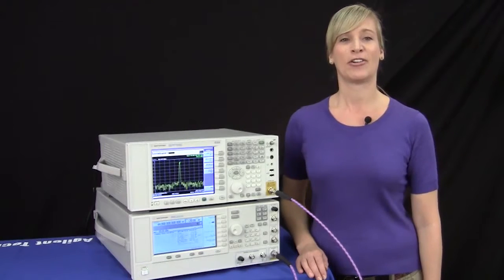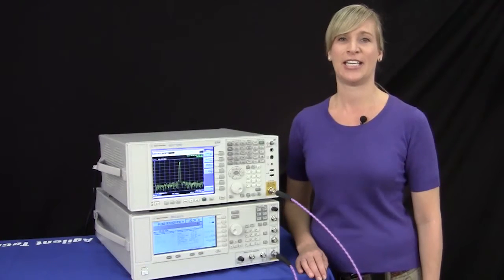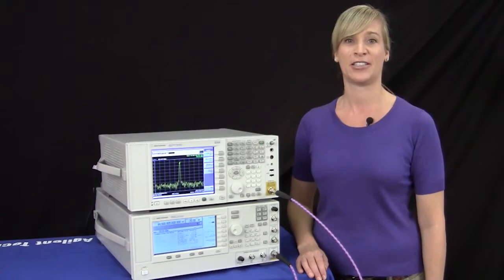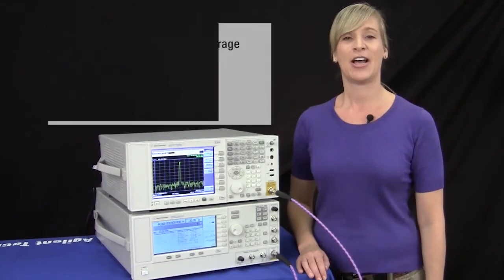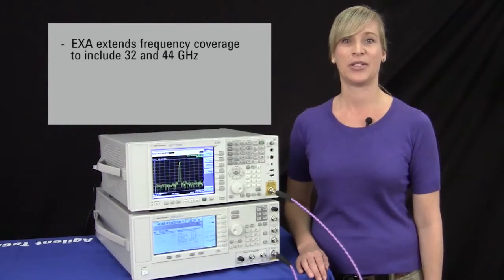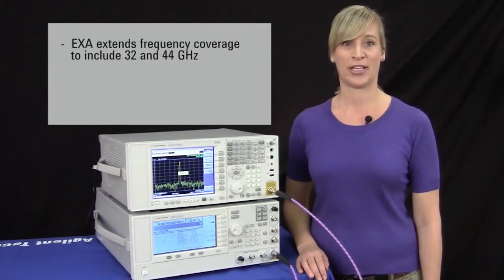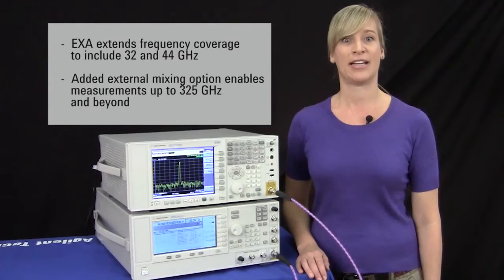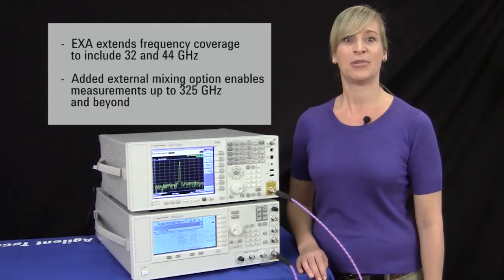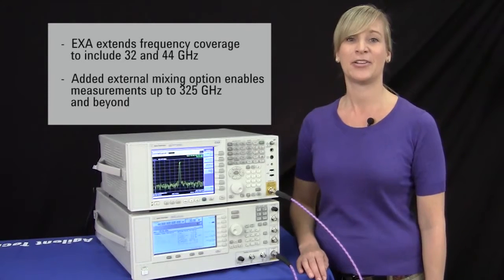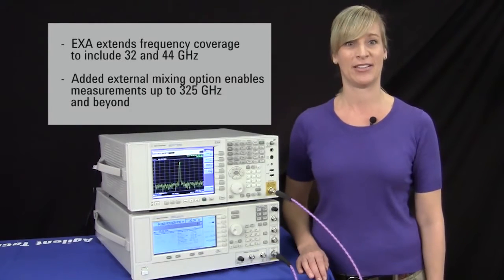Currently the EXA is offered in 3, 7, 13, and 26.5 gigahertz frequency options and now we're extending our frequency coverage to include 32 and 44 gigahertz. Plus we've added an external mixing option that enables you to measure frequencies up to 325 gigahertz and beyond.